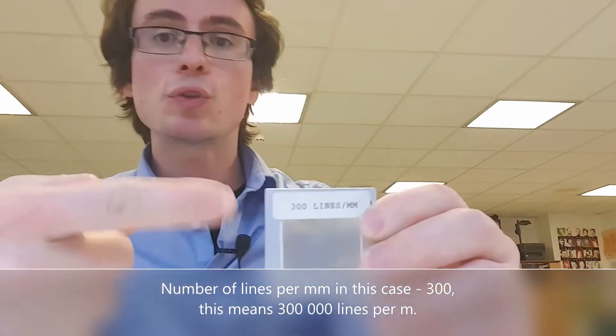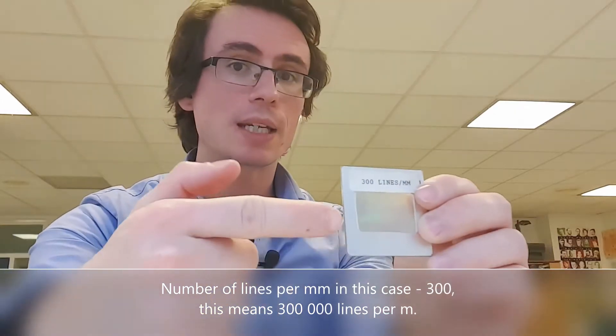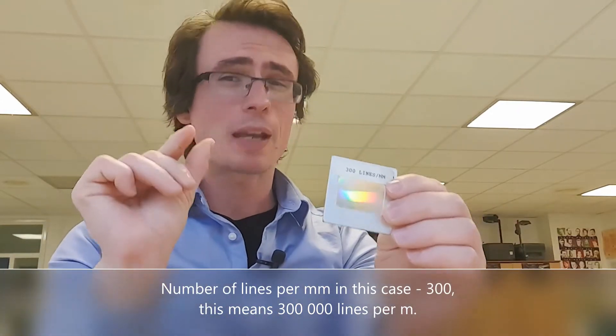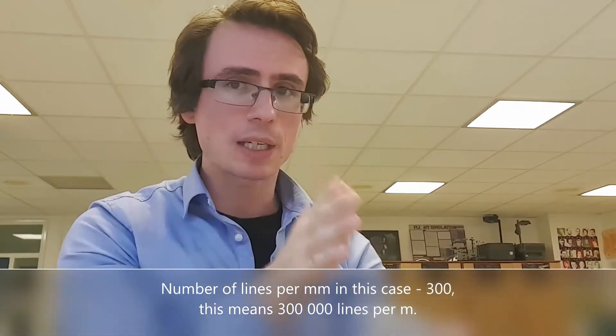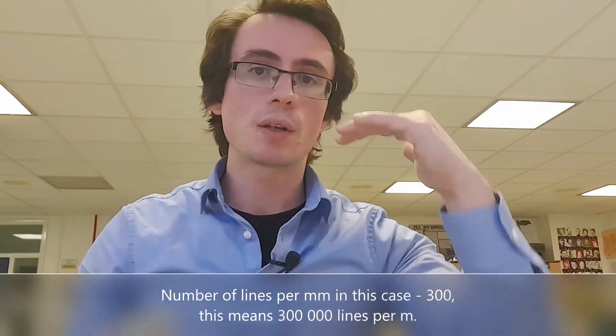What that means is, if we zoom into this diffraction grating on the scale of one millimeter, we'll see 300 separate openings. When light passes through those openings, it tends to spread. Today we're going to be analyzing this.